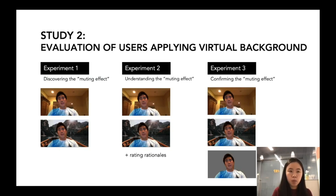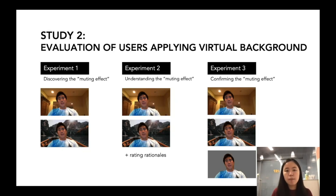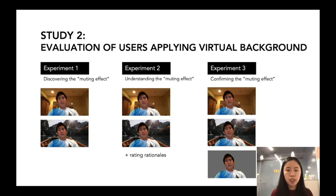In experiment one, participants would either see job interview videos showing the real environment of these job candidates or showing a couple of different virtual backgrounds. In experiment two, the video stimulus was the same, but we followed up with questions to understand whether participants were influenced by the environment and use of background in how they rated candidates. In experiment three, we added an additional condition comparing whether there's any difference in the use of virtual background versus just using a gray screen in a video chat.